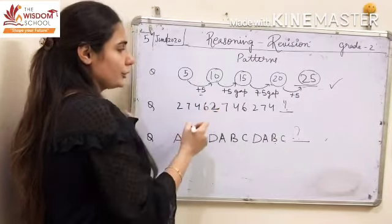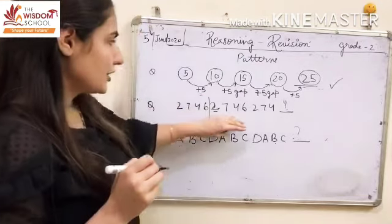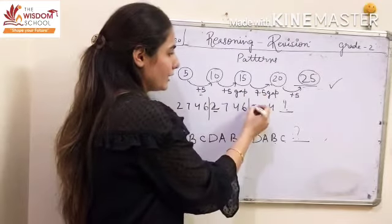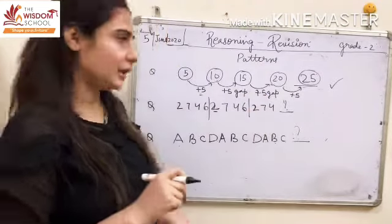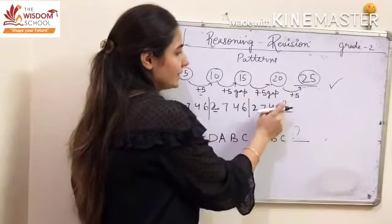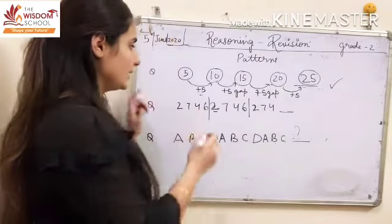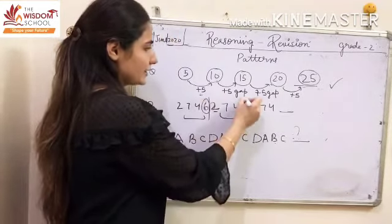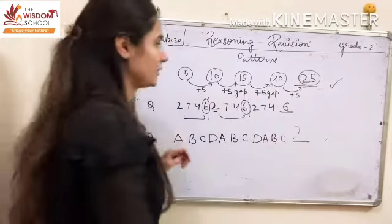After 6, children, observe that 2 is repeating again. So you will put a dividing line after 6. Again the pattern is 2, 7, 4, 6 — after 6, again 2 appears. So put a line after 6. Then you see 2, 7, 4 and the next number is missing. Children, check what comes after 4 in both patterns — it is 6. So here you will write 6. This is the complete pattern.